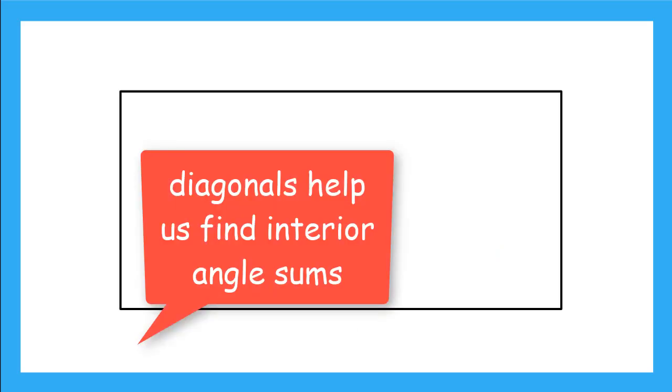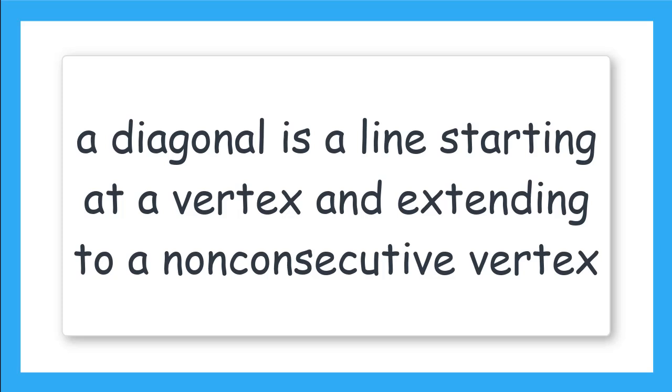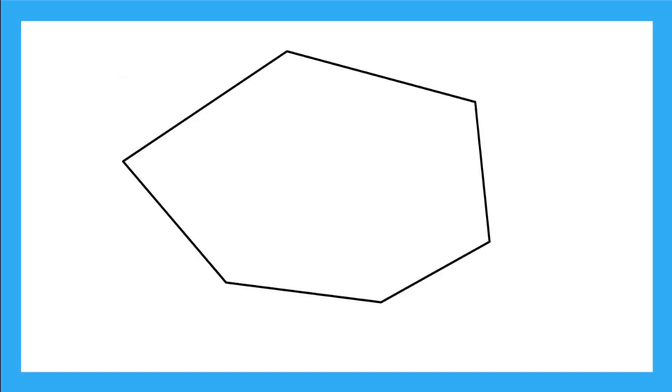We can draw diagonals in polygons to help us find the sum of interior angles. Remember a diagonal is a line that is drawn from one vertex to another vertex that is non-consecutive or not a neighboring vertex. So in this rectangle, if I start my diagonal at this vertex, the only other vertex I can draw my diagonal to is this one here.